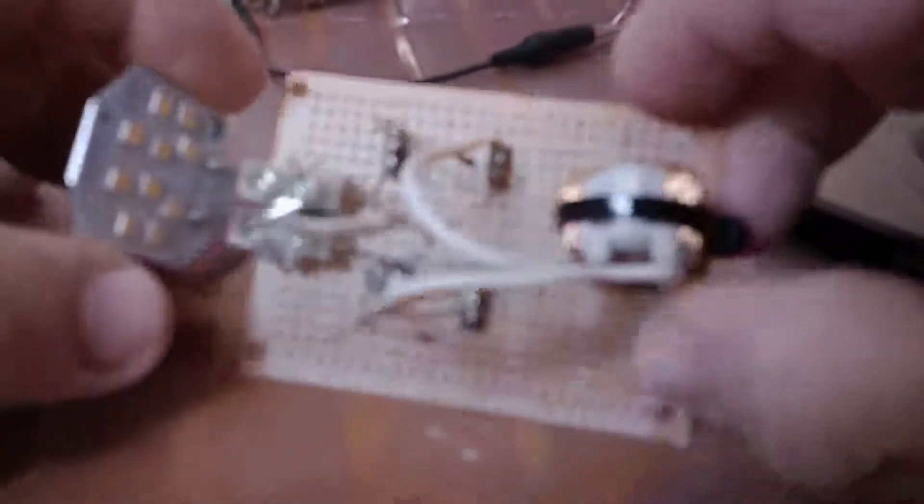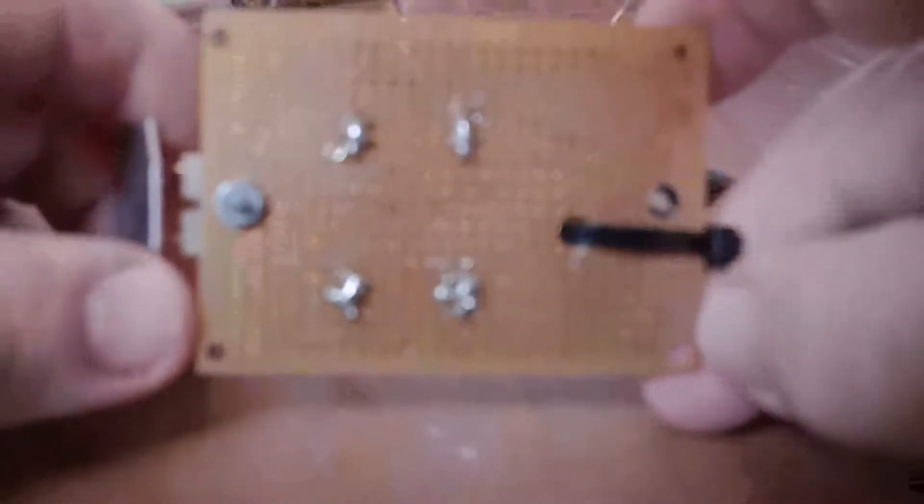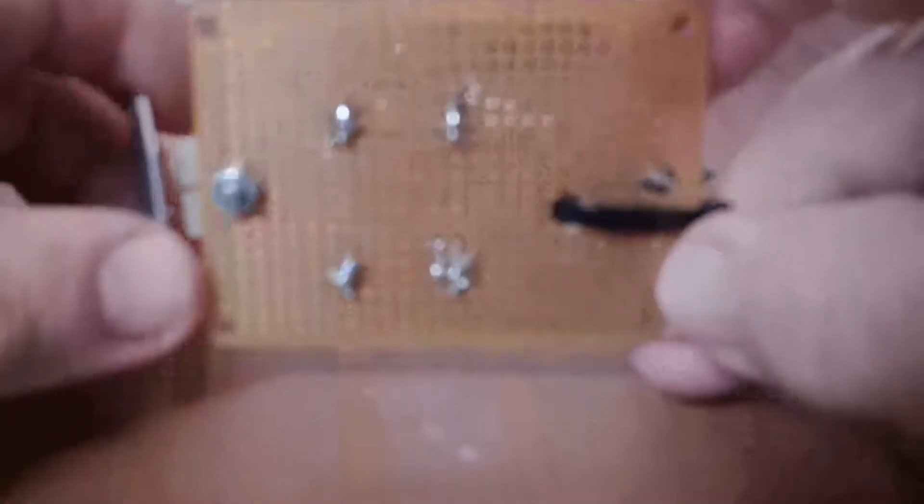Here's the Cree board. This is a 13-watt Cree board out of a normal light, one of the lights that replaced the incandescence. On the bottom of the board, there's just a couple of solder strips.